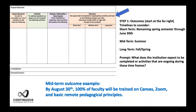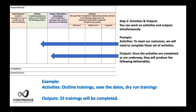An example of a mid-term outcome: by August 30th, 100% of faculty will be trained on Canvas, Zoom, and basic remote pedagogical principles — 100%, including all adjunct faculty. It's ambitious, but it needs to happen. You can work on activities and outputs simultaneously. Activities might include outlining trainings, prepping for them, sending out dates, and doing a dry run. An example output would be completing 25 trainings.